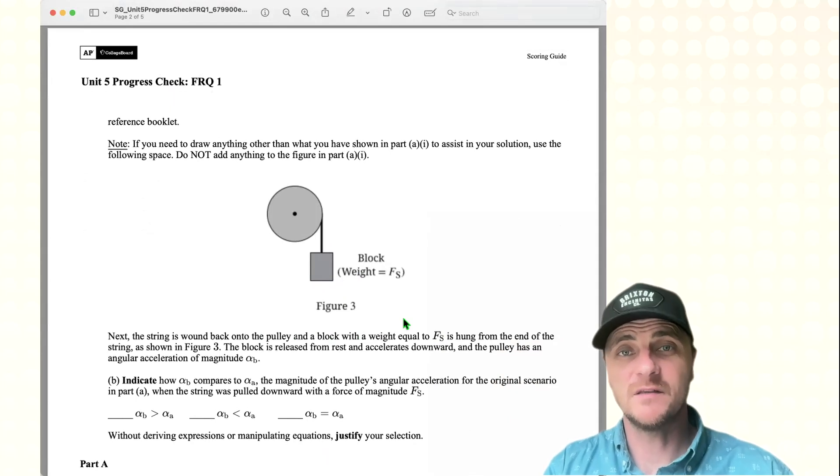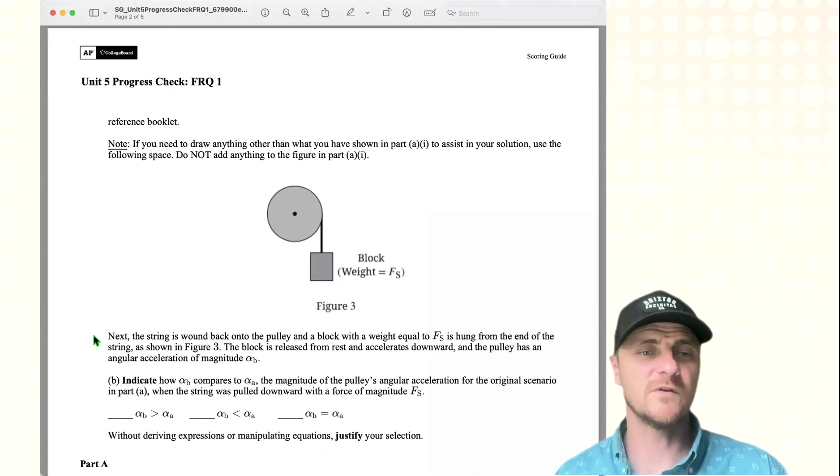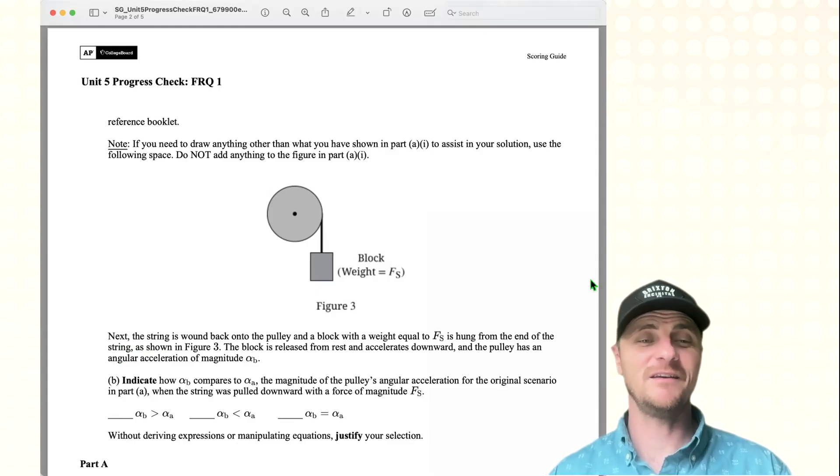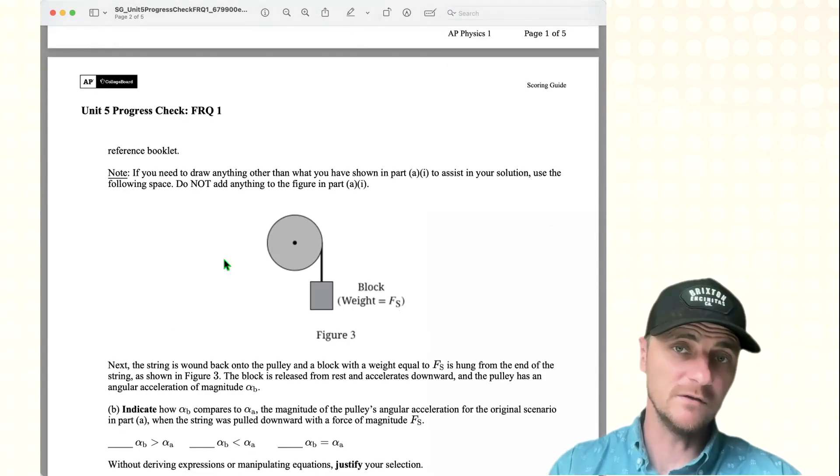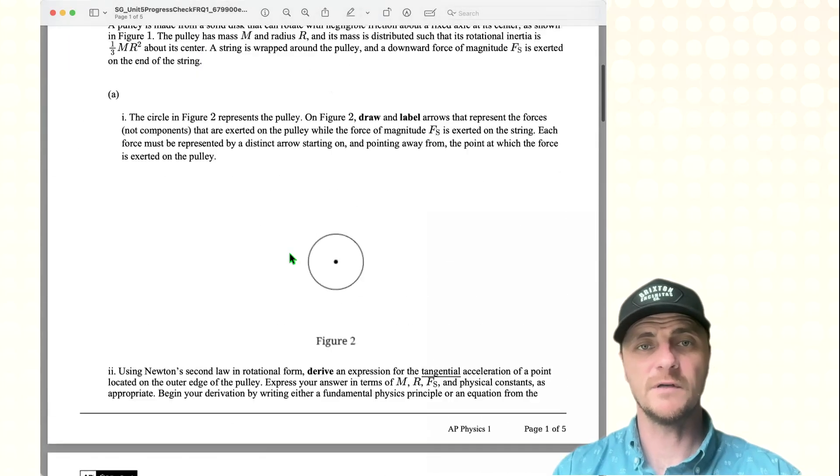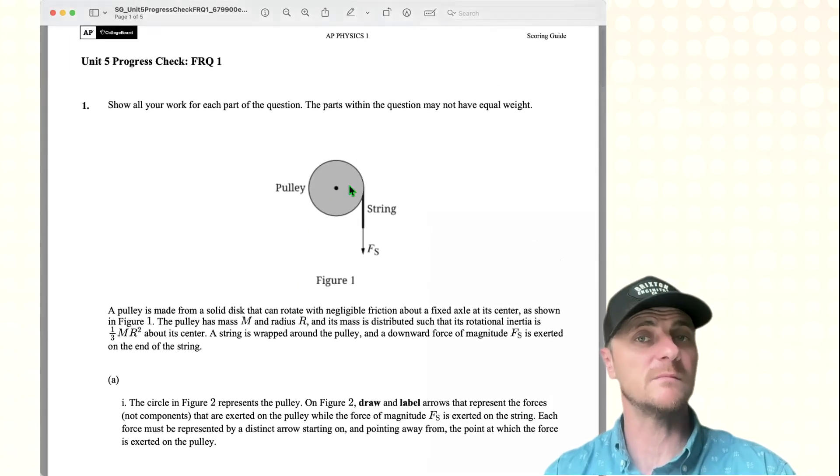All right, so they've made a slight adjustment to the system in part B. Let's take a look. Next, the string is wound back onto the pulley, and a block with a weight equal to FS is hung from the end of the string as shown in figure 3. The block is released from rest and accelerates downward, and the pulley has an angular acceleration of magnitude alpha B. Part B. Indicate how alpha B compares to alpha A, the magnitude of the pulley's acceleration for the original scenario in part A when the string was pulled downward with a force of magnitude FS. So is the angular acceleration of this new system, alpha B, going to be different than our angular acceleration of the old system, alpha A?